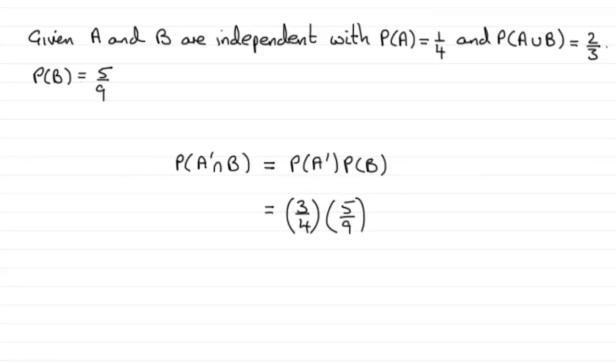And we could cancel here, or you could do it on the calculator, 3 into 3 goes 1, 3 into 9 goes 3. And so we end up with 1 times 5 is 5, and 4 times 3, well that's 12. So the probability of not A and B is 5 twelfths.